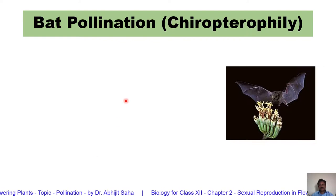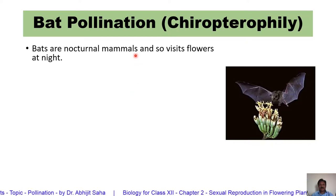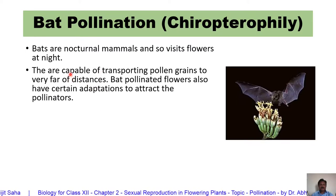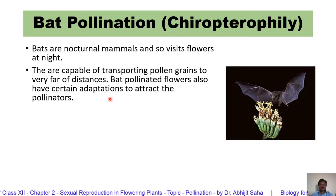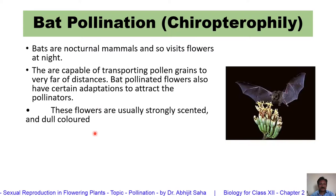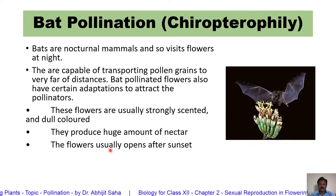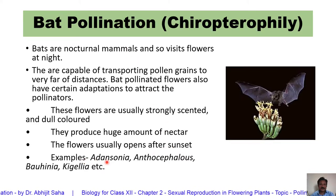Another pollinator group is bats — this is called chiropterophily. Since bats are nocturnal animals, they visit flowers only at night. Since bats fly to large distances, they are able to transport pollen to long distances as well. Bat-pollinated flowers have certain features: they are strongly scented but dull-colored, produce a huge amount of nectar, and the flowers usually open after sunset because bats are nocturnal. Some examples are Adansonia, Anthocephalus, Mauvinea, and Kigelia.